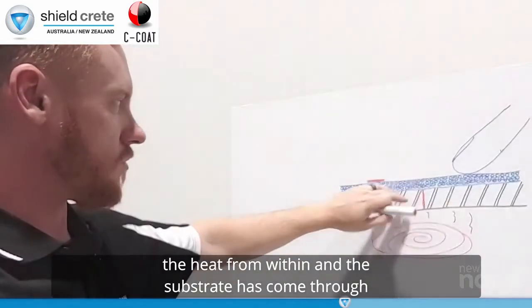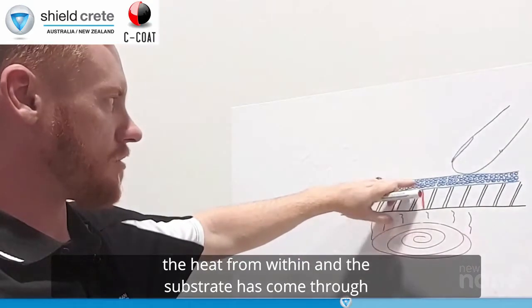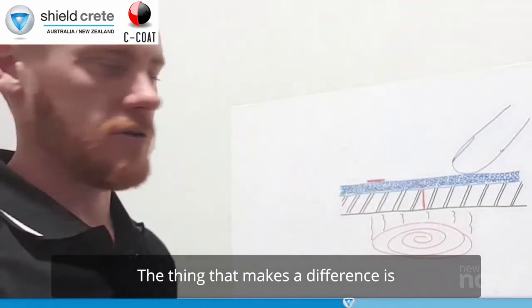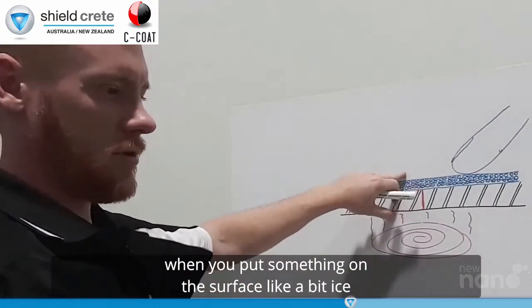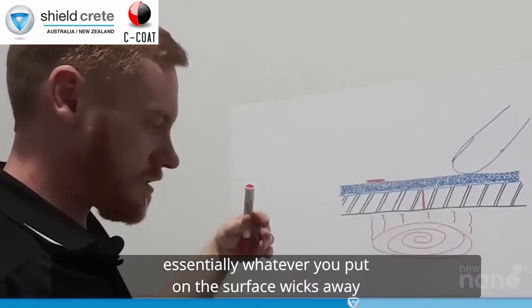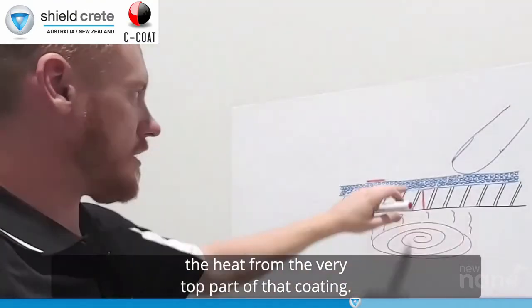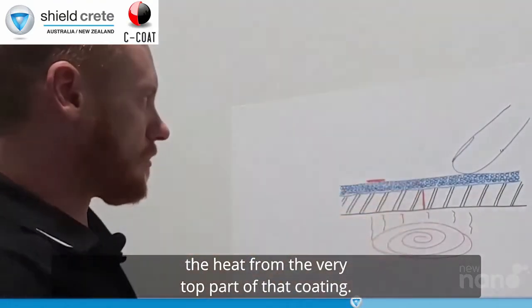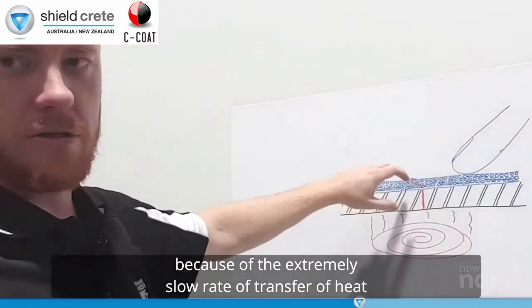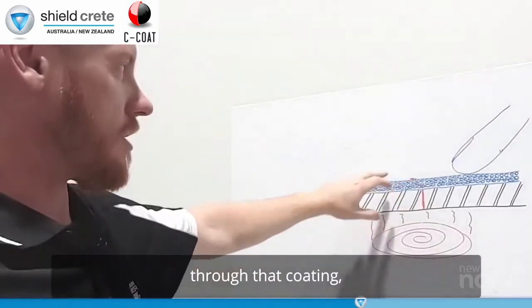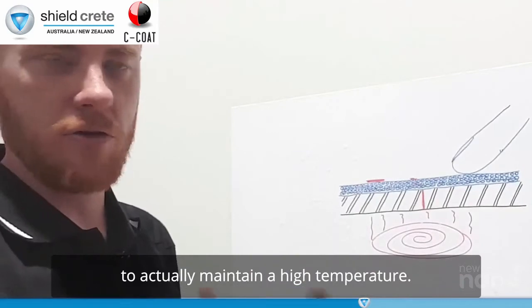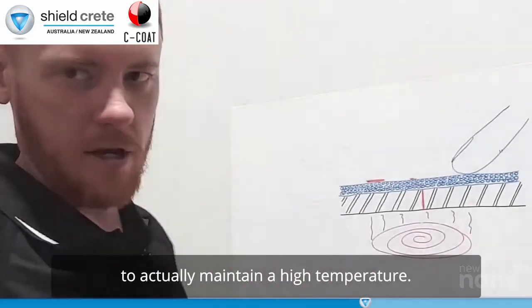But that's when it's in its steady state. So the heat from within and from the substrate has come through and basically filled up that entire coating. The thing that makes the difference is when you put something on the surface like a bit of ice or like a finger, essentially whatever you put on the surface wicks away the heat from the very top part of that coating and because of the extremely slow rate of transfer of heat through that coating, the heat can't be replaced at the surface quick enough to actually maintain a high temperature.